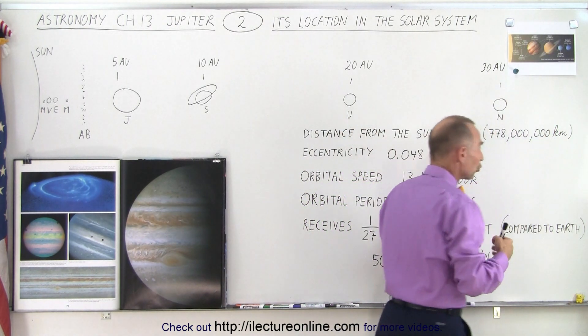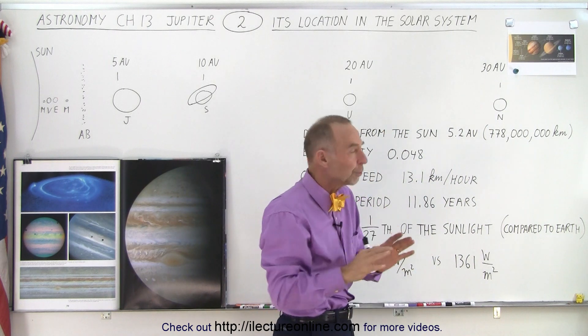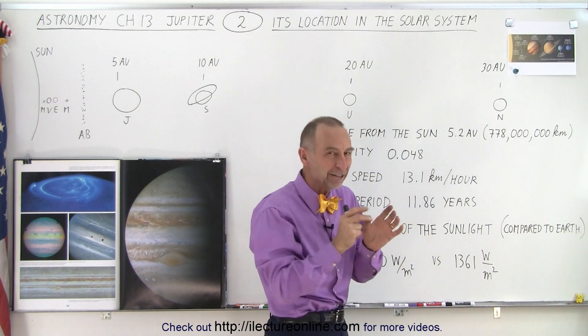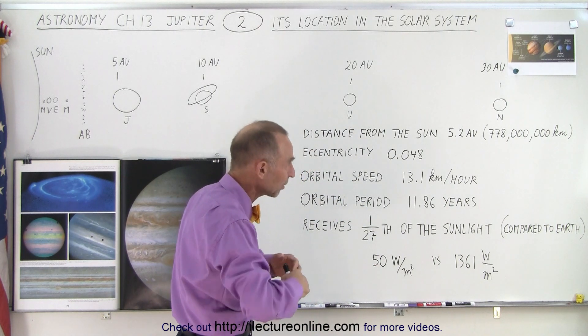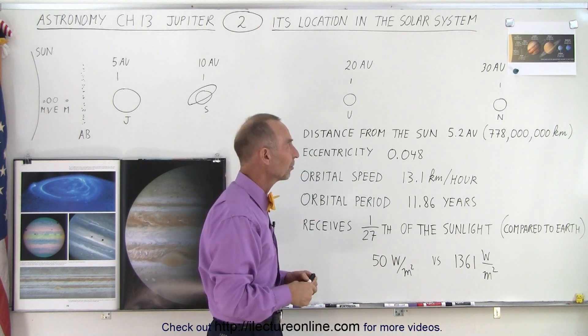Now Jupiter and Saturn are truly gas planets. Uranus and Neptune have a slightly different composition, so we'll take a look at that later when we talk about those planets, but we tend to call them the four large gas planets.